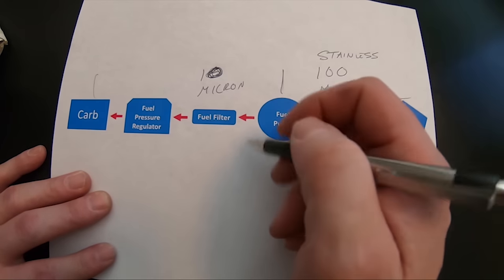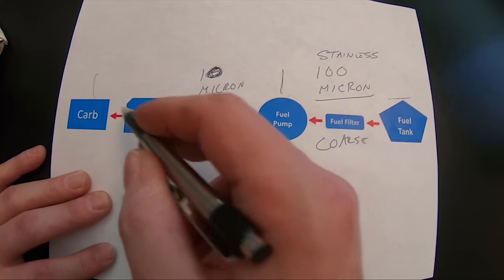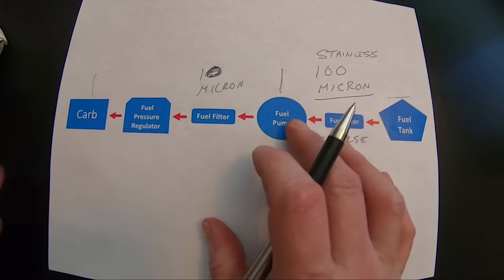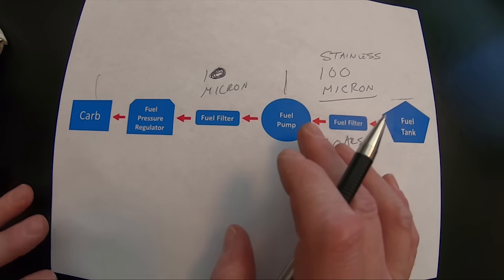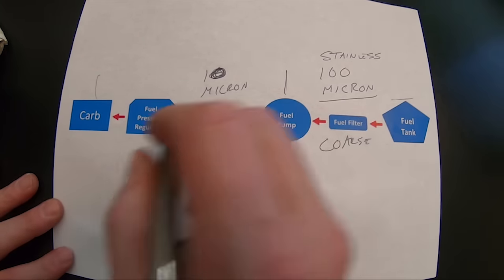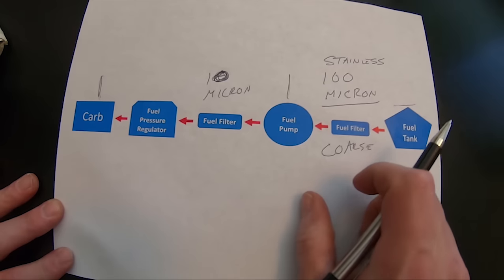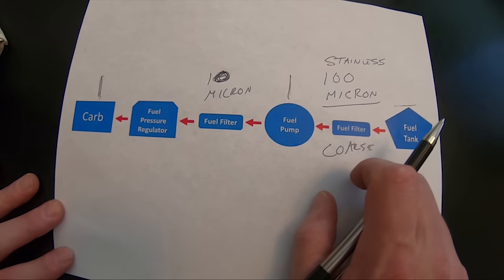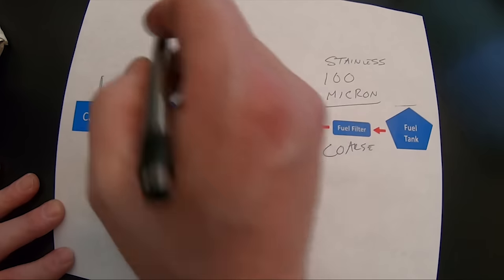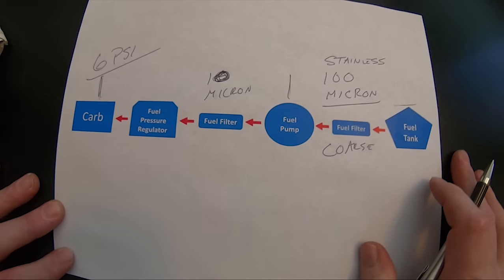The nice thing about a good fuel filter between the pump and the carburetor is if it's a good one, you'll have a very minimal drop on a paper element in fuel pressure. And where this becomes important is carburetors tend to like a certain amount of pressure to operate. The Edelbrock carburetor is no different. Six PSI is really the limit here on an Edelbrock carburetor.